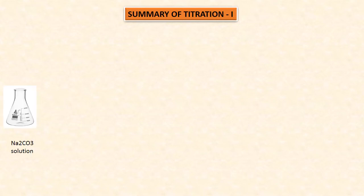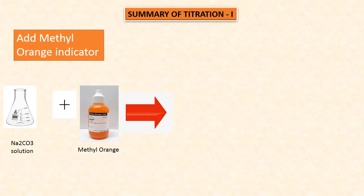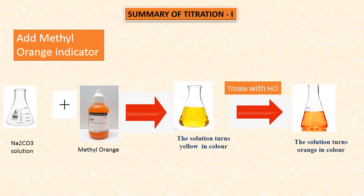Enter the value in the tabular column as shown. Summary of titration one: we took sodium carbonate solution, added methyl orange indicator — solution turns yellow — and upon titrating with HCl solution we get orange color, which is the endpoint.